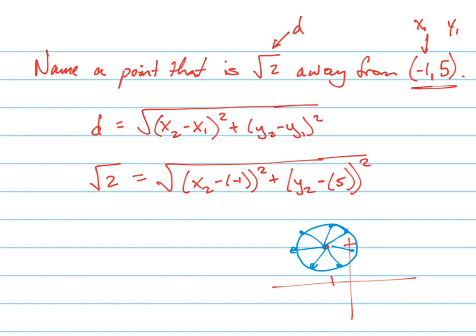Let's simplify this a little by getting rid of the square roots on both sides. So we've got (x2 + 1) squared plus (y2 − 5) squared equals 2. That's a bit easier to look at — and by the way, this is the equation of a circle.